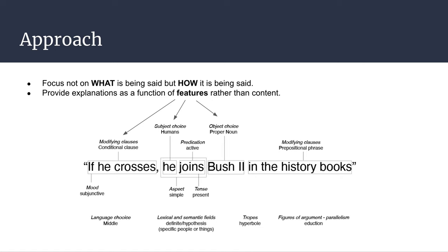This has long been the purview of rhetoricians and linguists. And while computational linguistics give us some techniques for extracting syntactic and morphological features from natural language, there is no single automatic procedure for extracting the rich rhetorical devices and other linguistic characteristics specific to the language of persuasion.